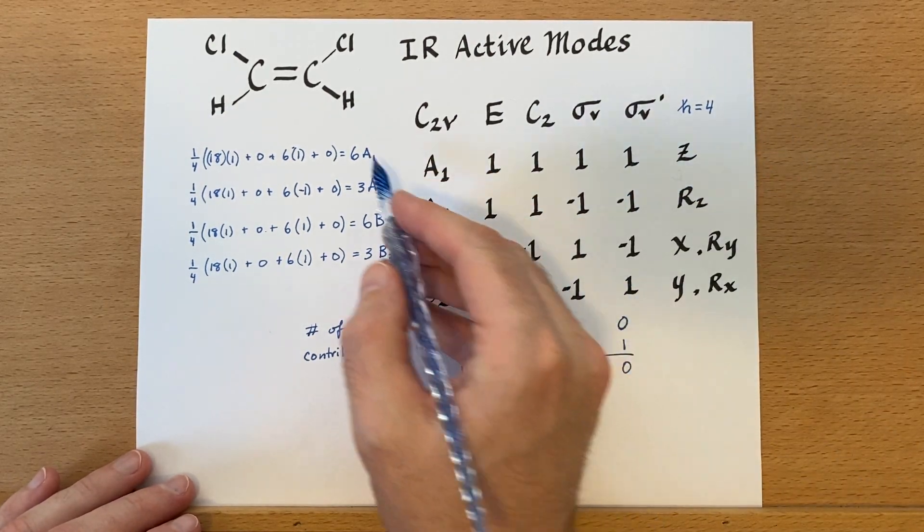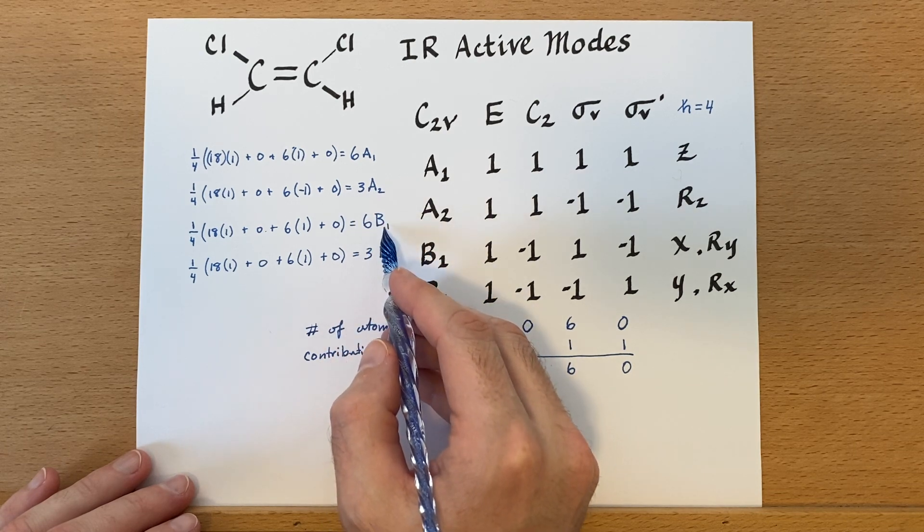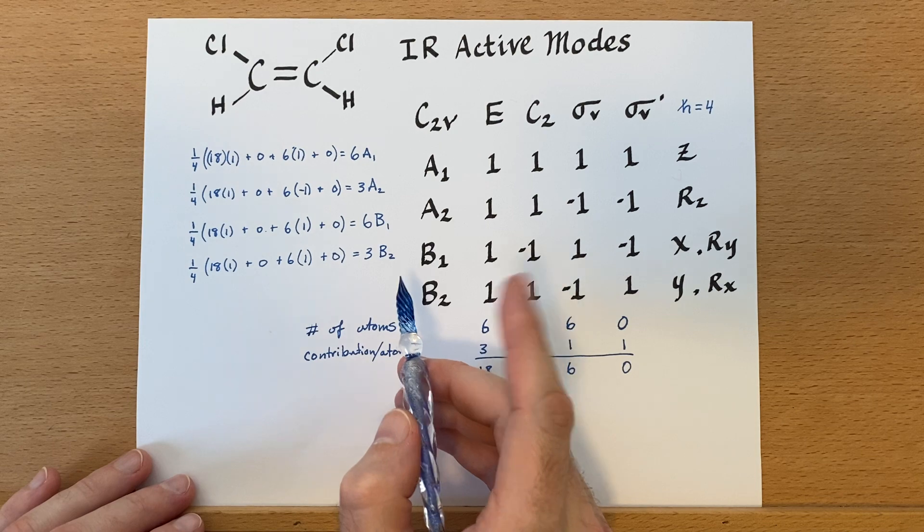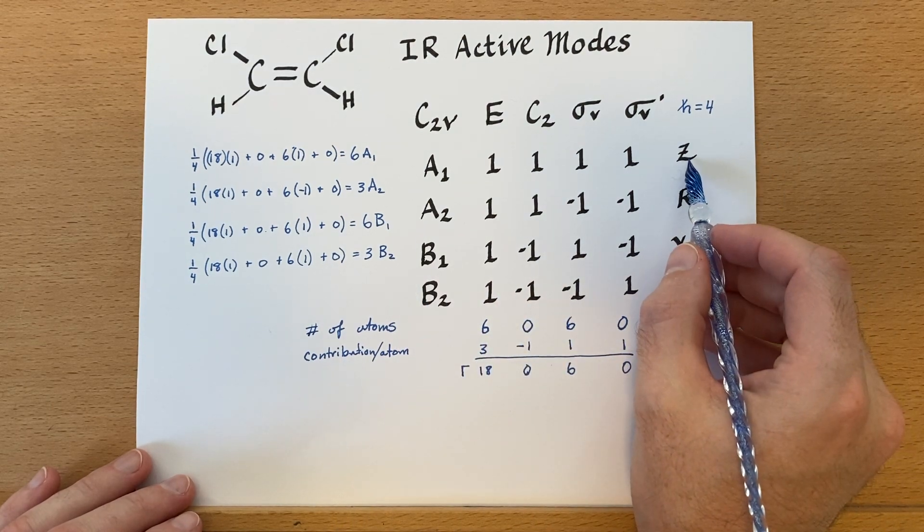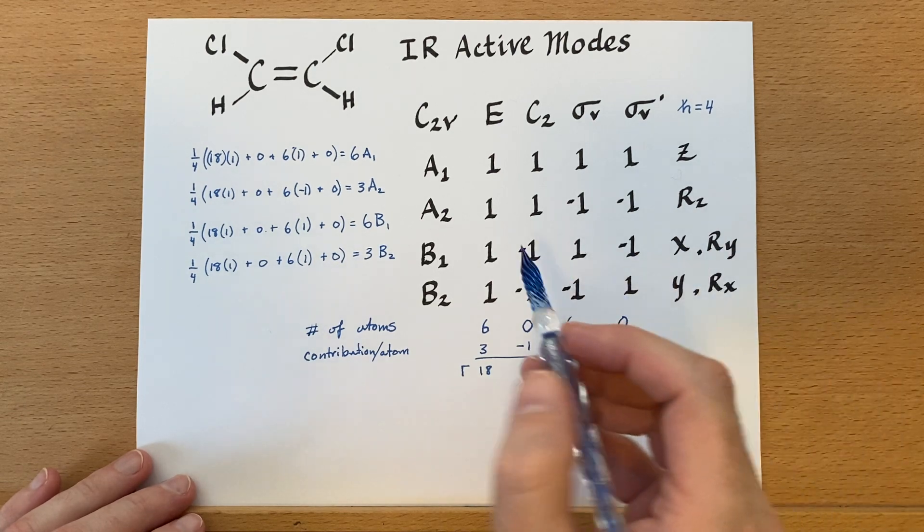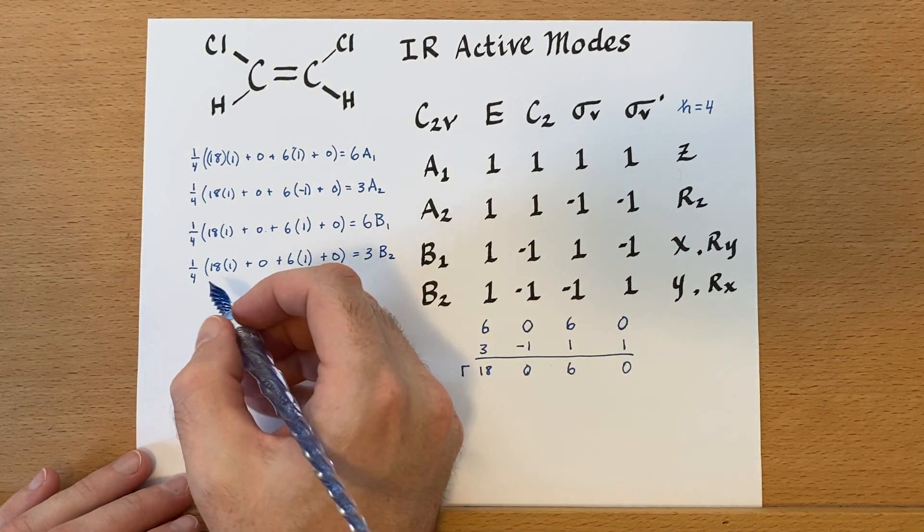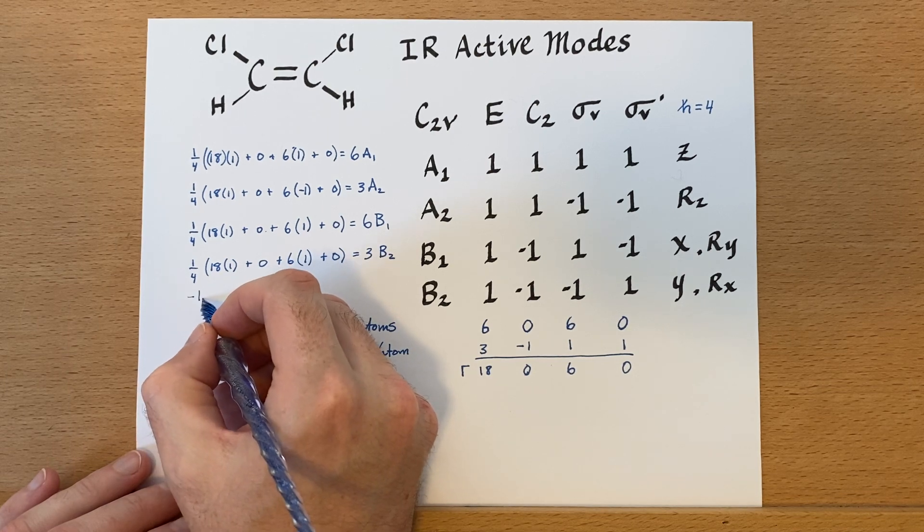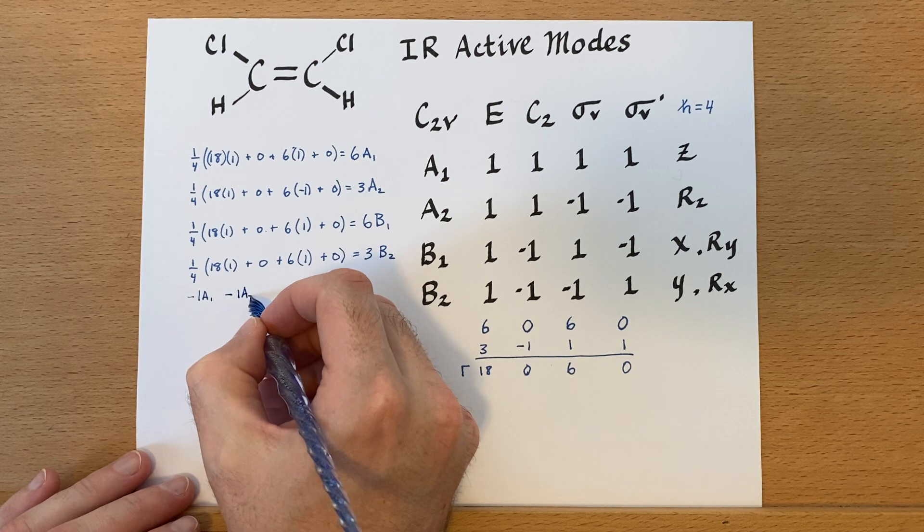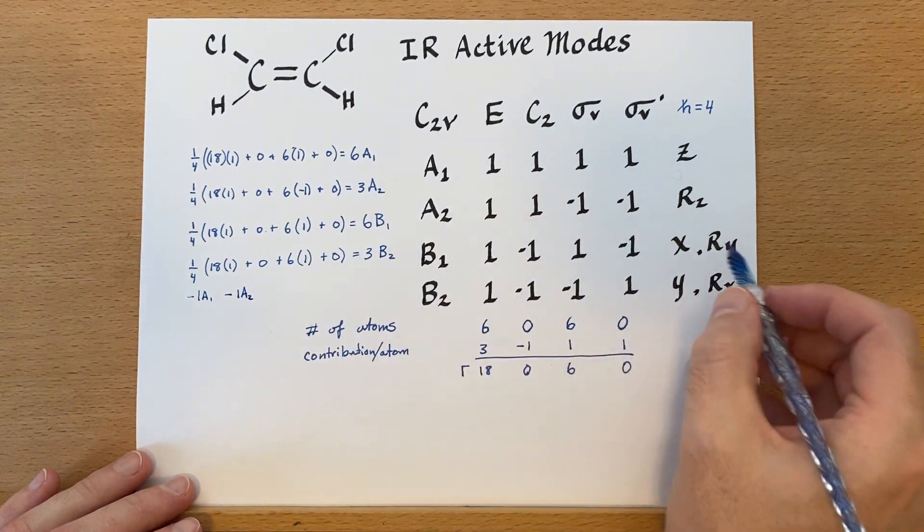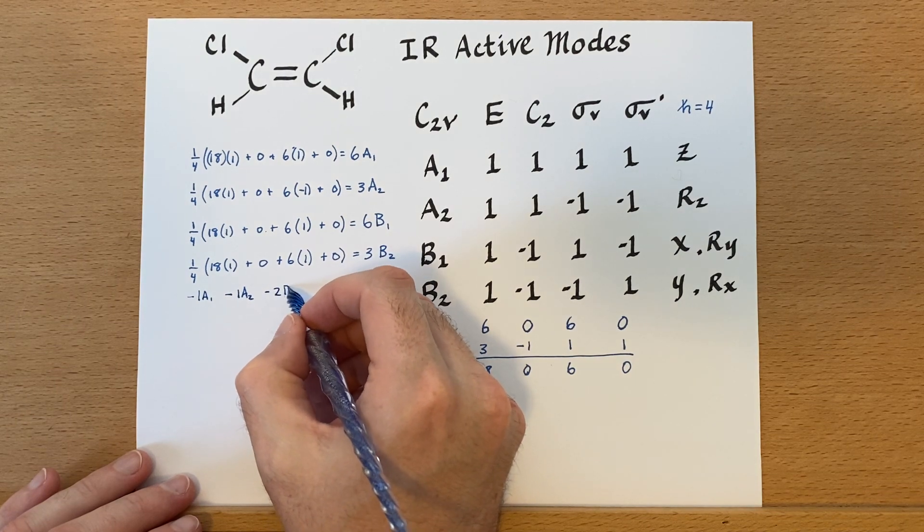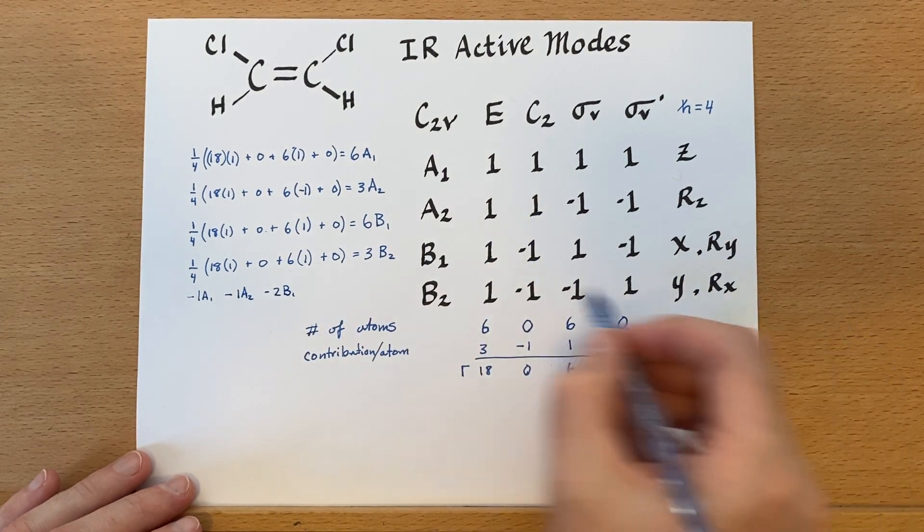So, we've got this six A1s, three A2s, six B1s, three B2s. Next, we have to remove the translation and rotation modes from this. So, if we do that, we'll lose one A1, we'll lose one A2, and we'll lose two B1s, and we'll lose two B2s.